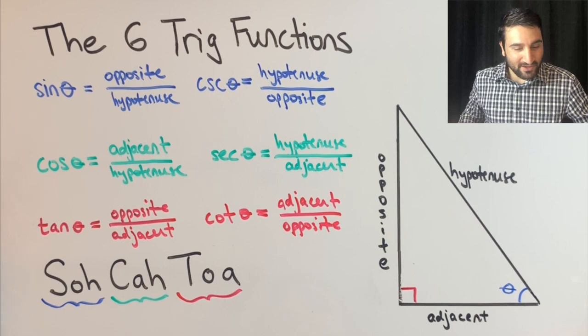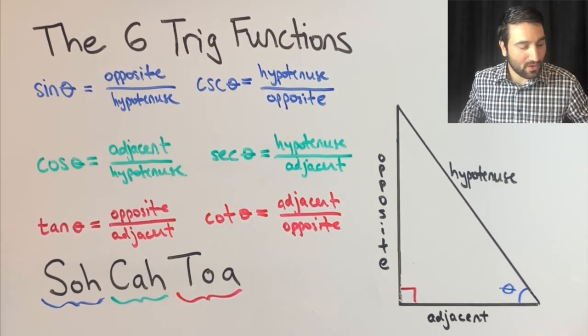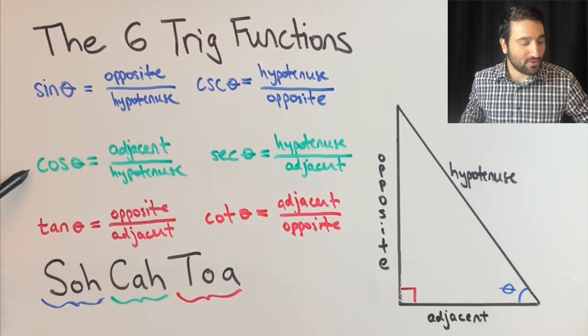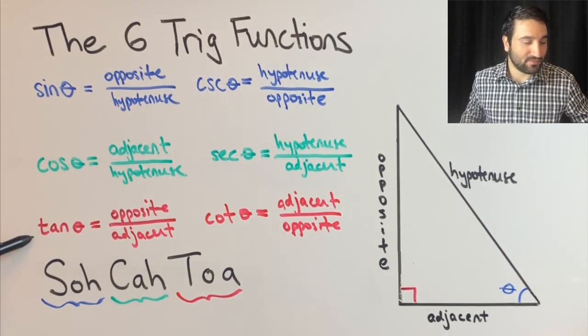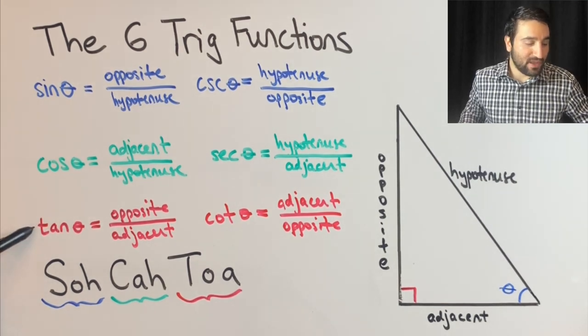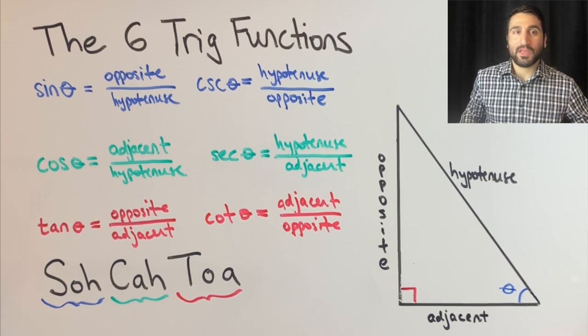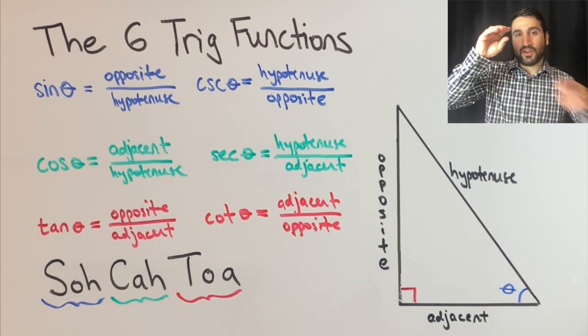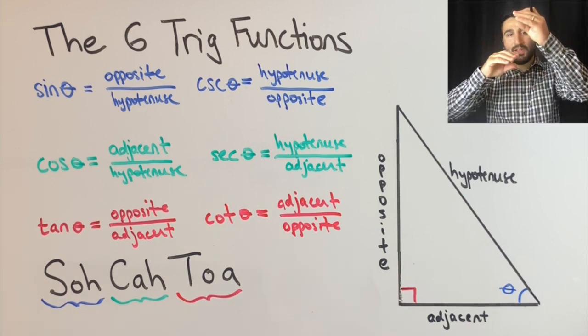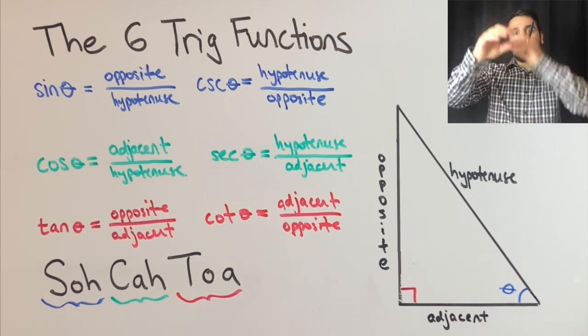So if you see here, we have six trig functions. The three main ones are sine, cosine, and tangent. Each of these three have a reciprocal version of itself. Reciprocal means that the numerator and denominator are flipped. Not negative, not inverse, it's reciprocal.